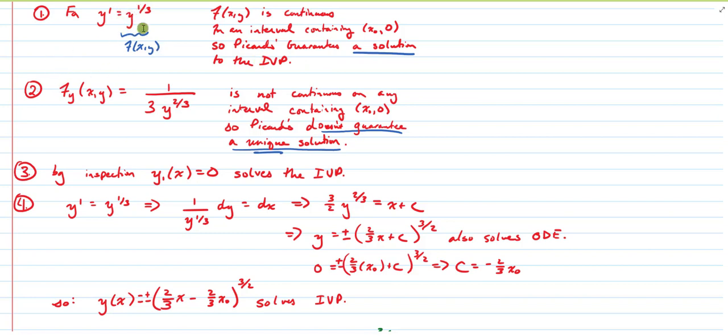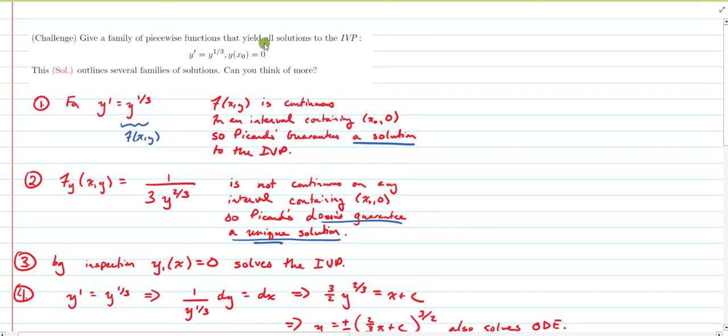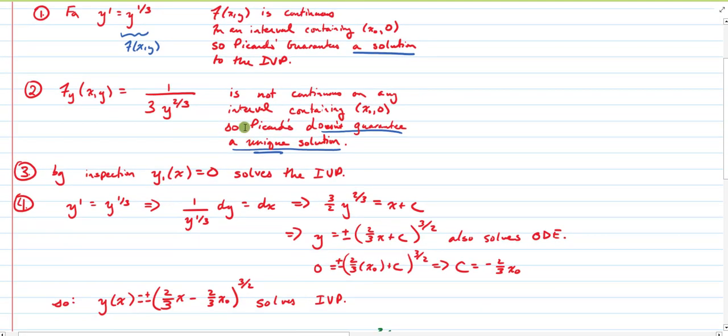What's interesting, though, is if we take the partial derivative of that function on the right-hand side when we're in normal form with respect to the variable y, this is what we end up with. And we see that this expression here is not defined for y equals zero. So this function f sub y is certainly not continuous for any interval containing an ordered pair of the form x not comma zero, which is precisely what our initial condition is. We've got an initial y value of zero, but the partial derivative of the right-hand side of this function in normal form is not continuous at zero. So Picard's does not guarantee a unique solution.